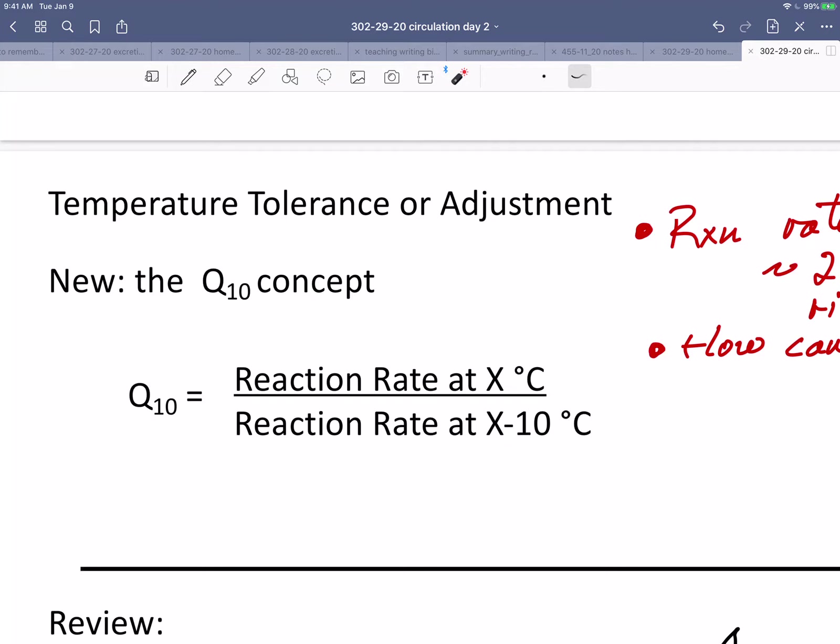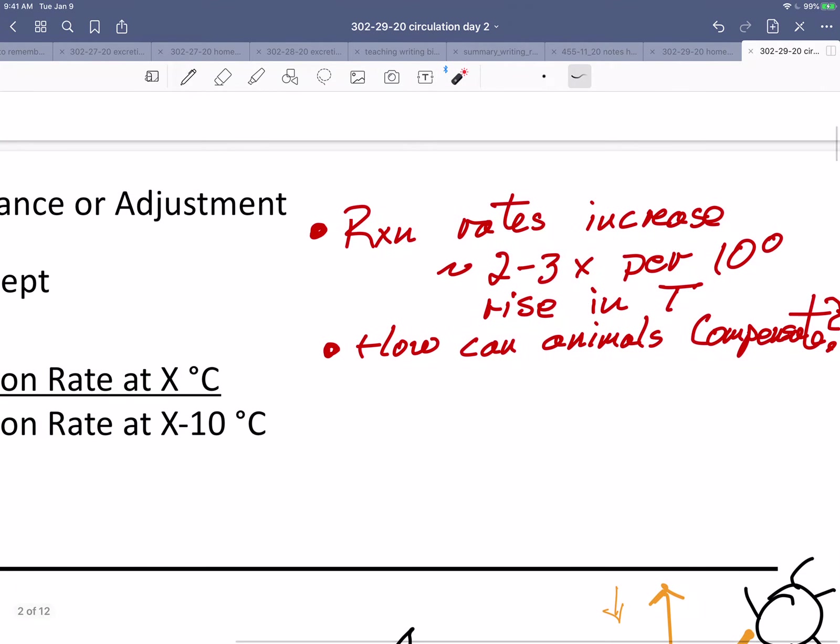For lots of reactions, that number is two to three. It's twice as high or three times as high at 10 degree higher temperature. But when you measure reaction rates in animals of reactions, often the Q10 is remarkably close to one. So clearly they're compensating in some way. How do they compensate?